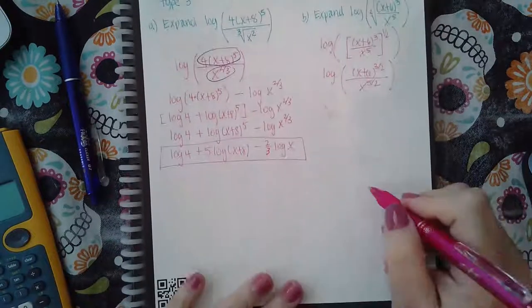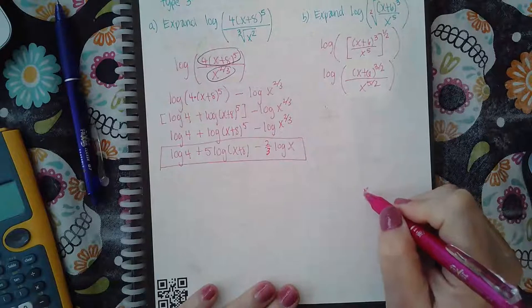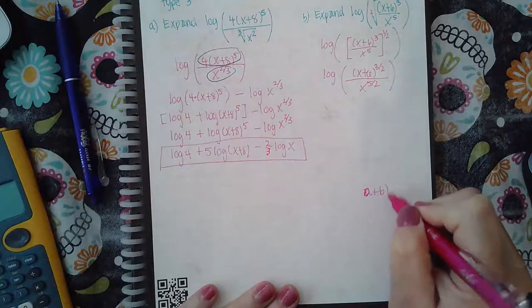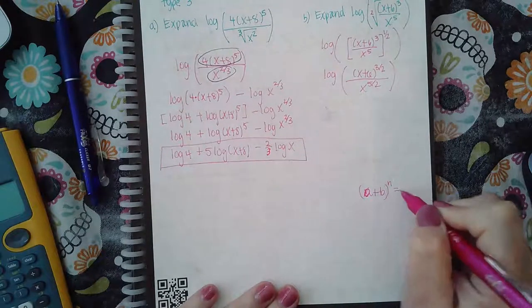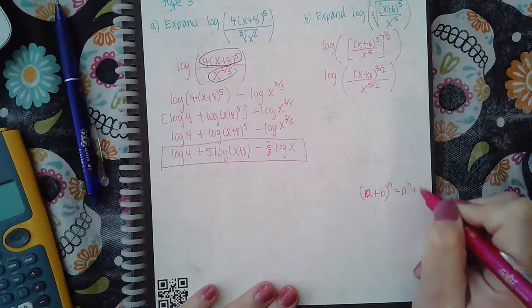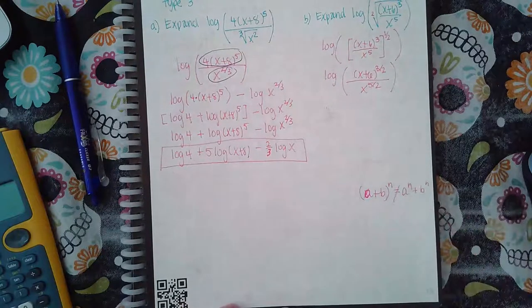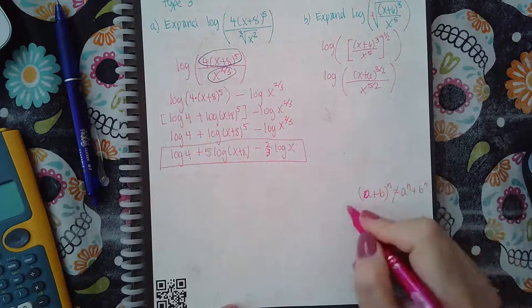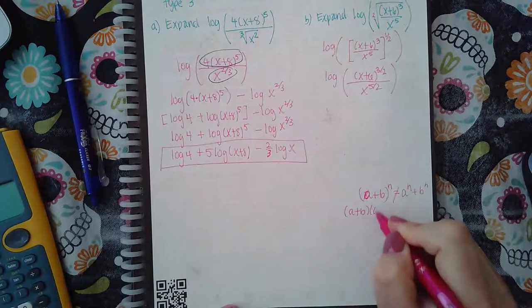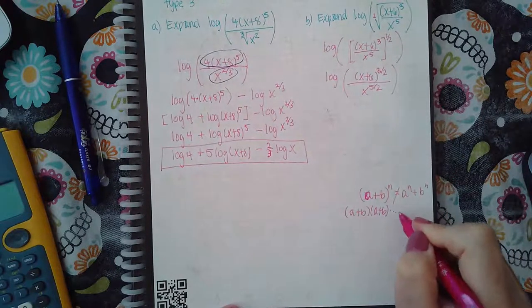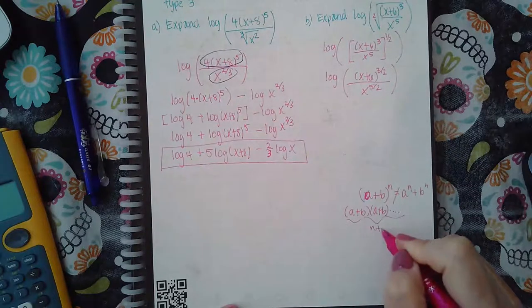There's no rule that says if you have something plus something else with an exponent that you can just apply the exponent to both terms. That's not true because what an exponent means is it means that thing times itself n times.